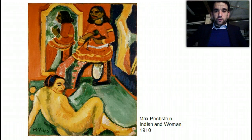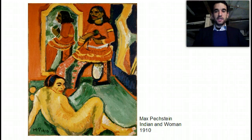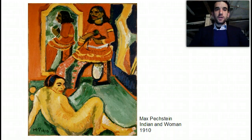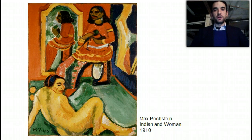Another member of the Die Brücke group who moved from the country into Dresden is Max Pechstein. Here we have Indian and Woman. This work is indicative of a change with regard to these painters — they stopped being people just copying landscapes or human forms. Instead, they became cool. People in France wanted to buy Fauvist paintings because the painters were cool, and by the time that culture was spreading around, artists were getting a bit of credibility behind them.